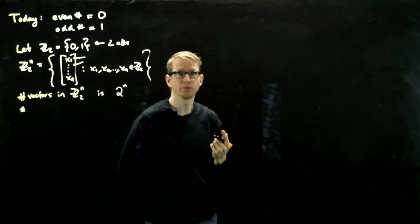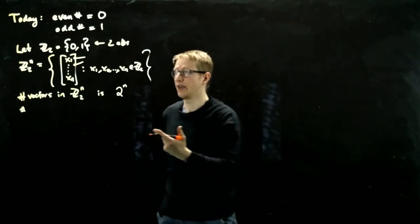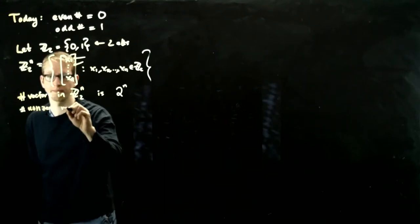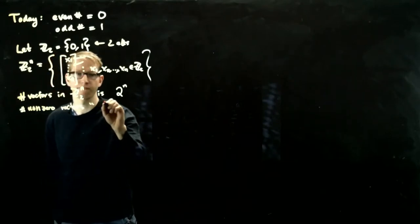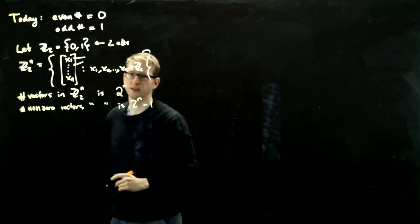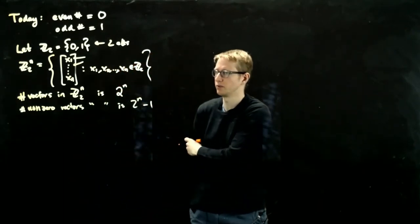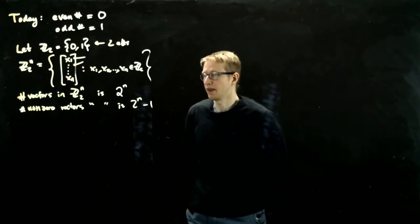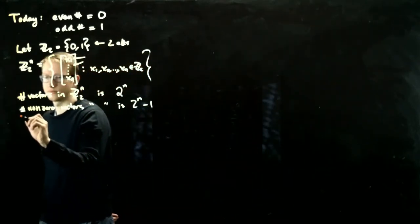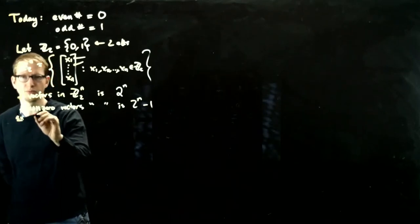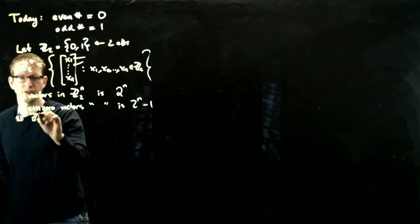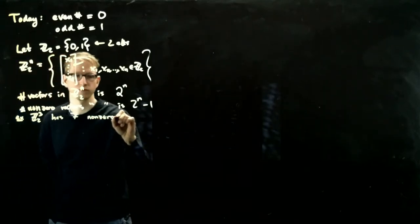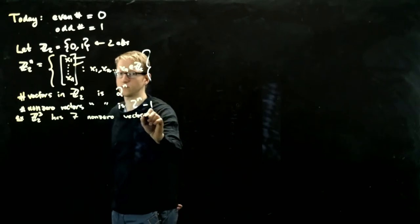And one of those vectors is very special, namely the 0 vector. And the non-zero vectors, well there's just one less of them. And I know that sounds like a trivial thing to point out, but it'll actually be important in our discussion. And so for example, this is the main example that we'll be working with: Z mod 2 to the third power has 7 non-zero vectors.